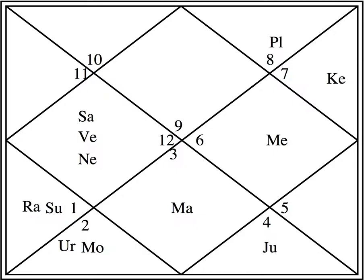Here begins the discussion on the house lords. We will discuss with an example, as it is best to learn with an example. We do not have the degrees of planets because we are not concerned about those degrees, neither are we concerned about the placement of planets in itself, nor the nakshatras. We are only concerned about seeing which planet is ruling which house — we are not concerned about where the planet is sitting. That we will discuss in the next video.